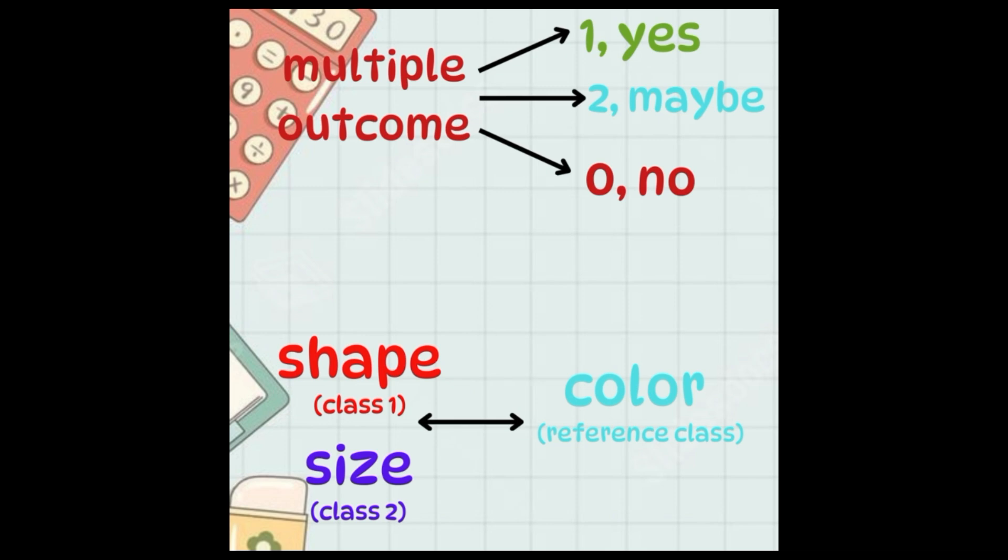Instead of modeling the probability of one class relative to the other, multinomial logistic regression models the probability of each class relative to a reference class.